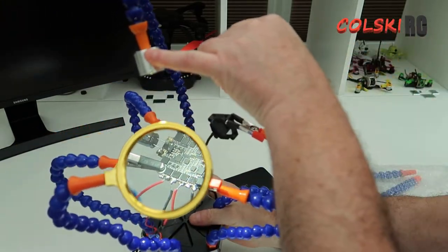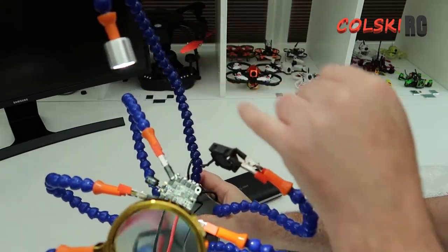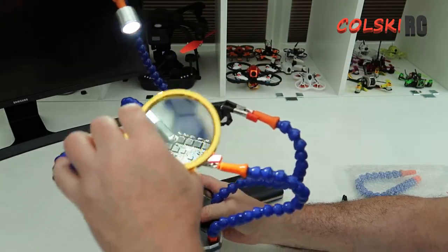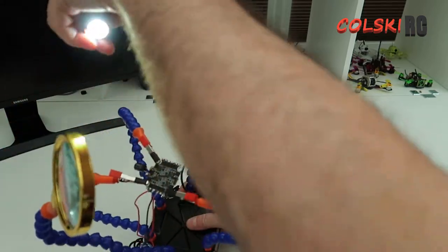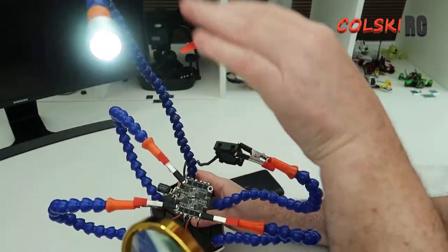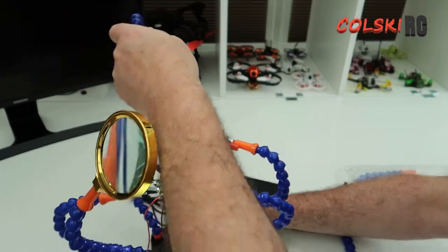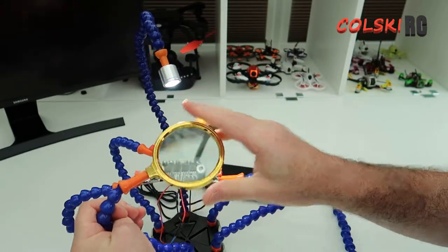So there you go, you can see you got a light on here that shines down there onto the item, and then you've got your magnifier. The light's actually quite bright. I don't know if you can see it very well on the camera, but it is quite a nice bright light. And as I said, the magnifier works.